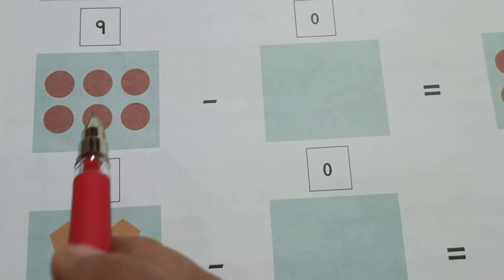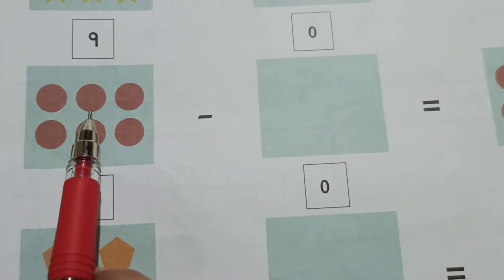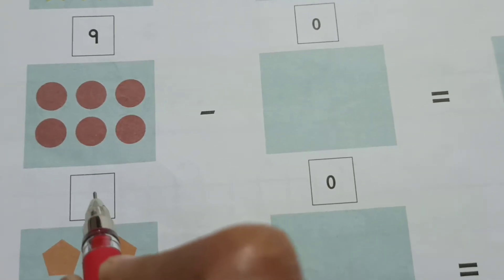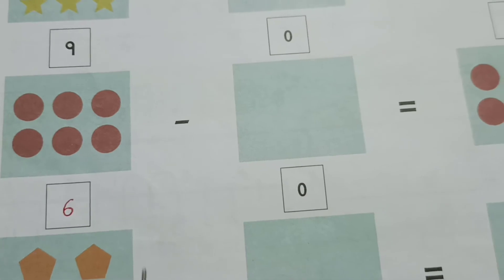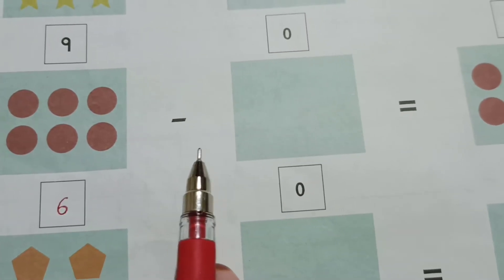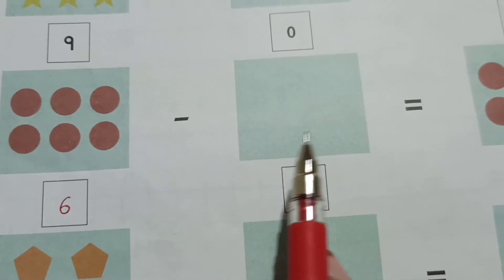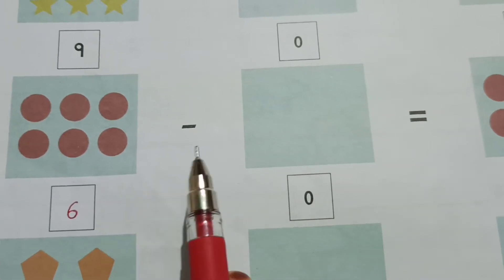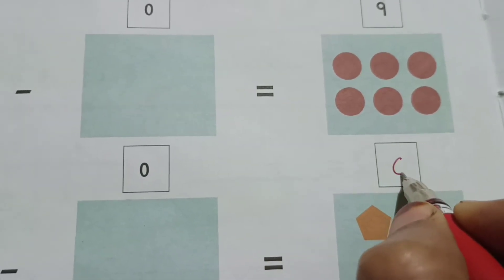Next one here: 1, 2, 3, 4, 5, 6. So we will write here 6. 6 minus, is there anything here? No, it is 0. 6 minus 0 is always same number, 6.